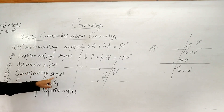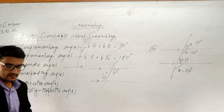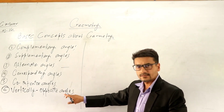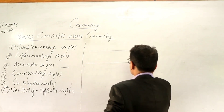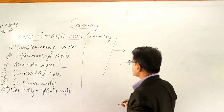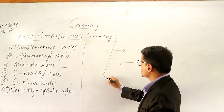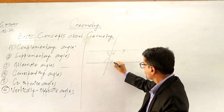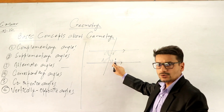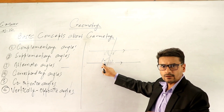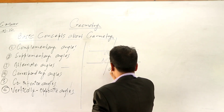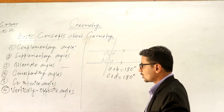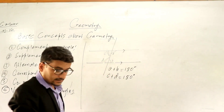Complementary angle sum is 90 degrees, supplementary angle sum is 180 degrees, alternate angles are always equal, and corresponding angles are also always equal. Now the remaining two are co-interior angles and vertically opposite angles. Look here carefully: these are two parallel lines and this is a transversal. If this is A, B, C, D — then A and B are co-interior angles, C and D are also co-interior angles. The sum of co-interior angles is always 180 degrees.